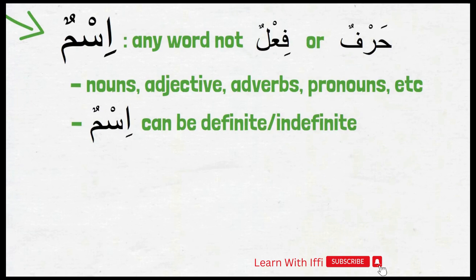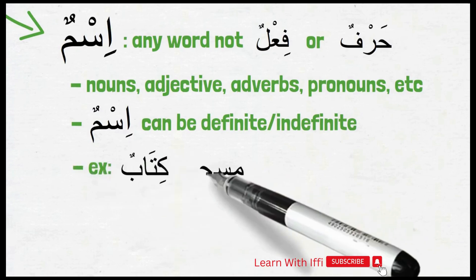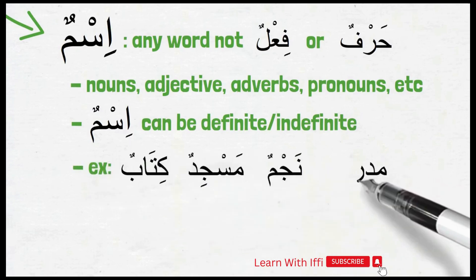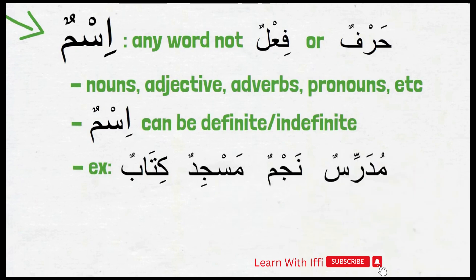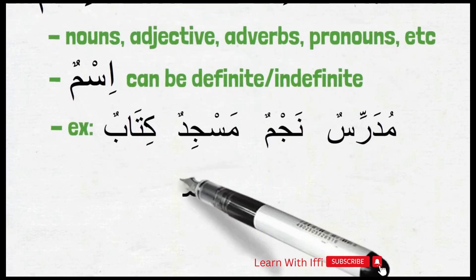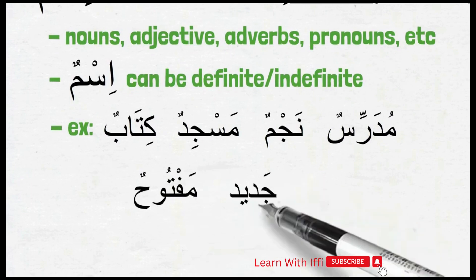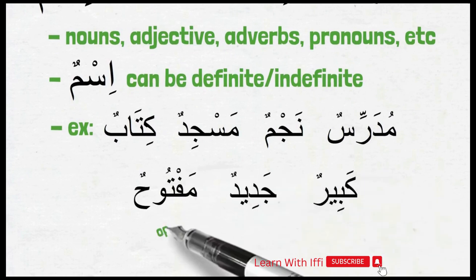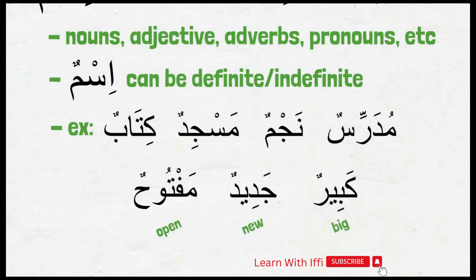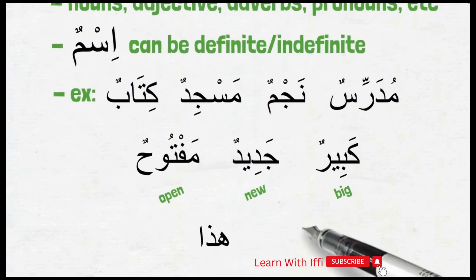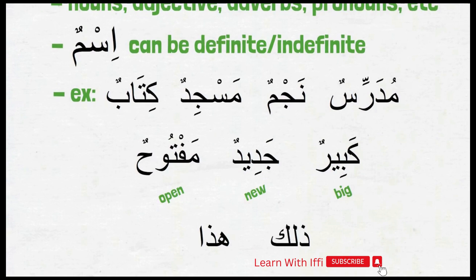Pretty much all the words we learned so far besides wa, naam and la were ism. For example, kitabun, masjidun, najmun, mudarrisun — these are nouns in English, so they are ism in Arabic. Or maftoohun, jadeedun, kabirun, which mean open, new and big — they sound like adjectives in English but they are ism in Arabic. Hatha and thalika are also ism — a special type of ism we will talk about more later insha'Allah.